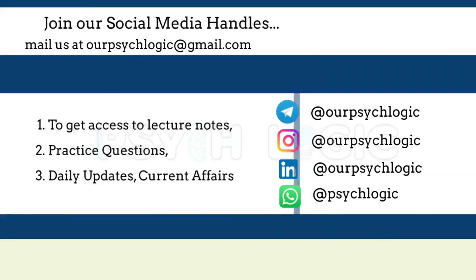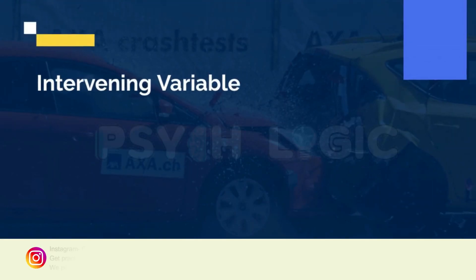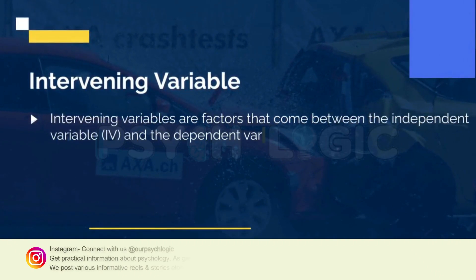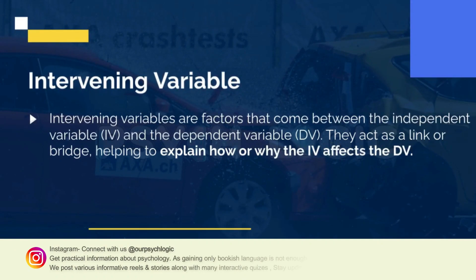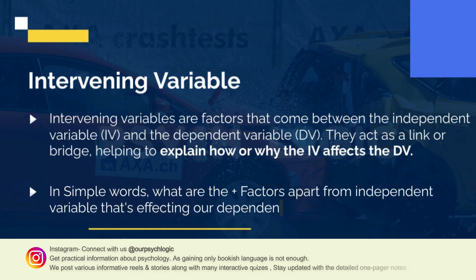Quick tip: you can join our Telegram and WhatsApp channel to stay updated with period government notifications, practice questions, current affairs updates, and all other information in the world of psychology. Moving on to intervening variables — intervening variables are factors that come between the independent and dependent variables. They are sometimes also called intermediate or mediator variables, because they act as a mediator.